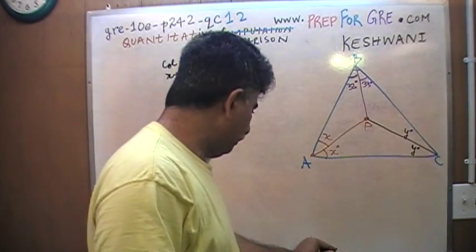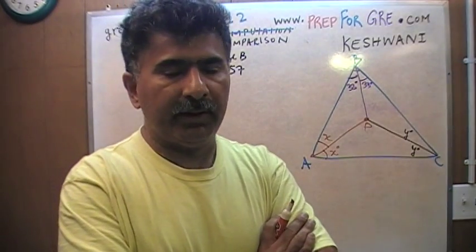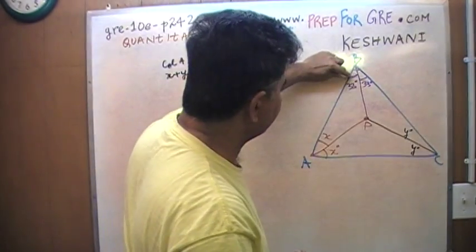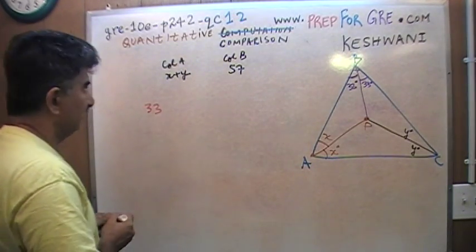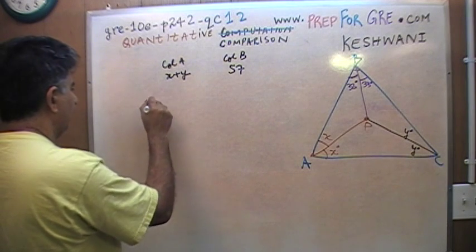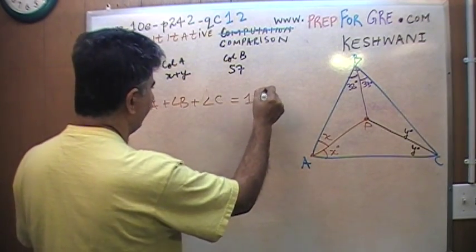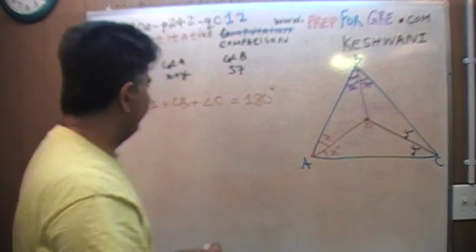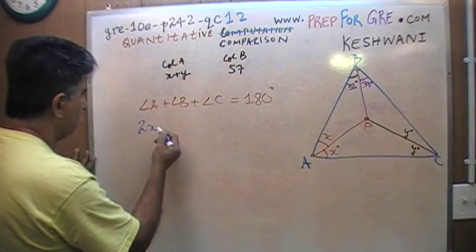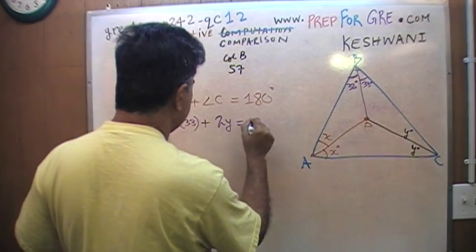There are basic things in geometry that one must know if one is to take the exam. One of the basic things you need to know is that in any triangle, regardless of the shape, the sum of all three angles has to add up to 180. That tells me that angle A — which is X plus X, so 2X — plus angle B — which is 33 plus 33, so 2 times 33 — plus angle C — which is 2 times Y — have to add up to 180.